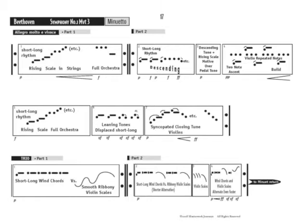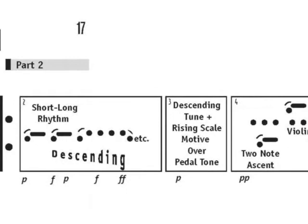This is the entire third movement of Beethoven's First Symphony, all on one page. There is no music notation and very little technical jargon. It has three parts.